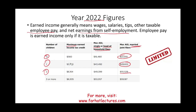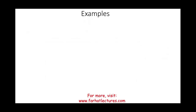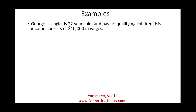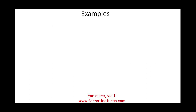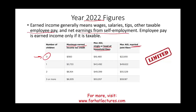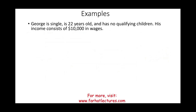Let's look at some examples. George is single, 22 years old, with no qualifying children, and has $10,000 in wages. His income is below the $16,480 limit for no-child filers, but George does not qualify — because the age requirement is 25 to 64, and George is only 22.